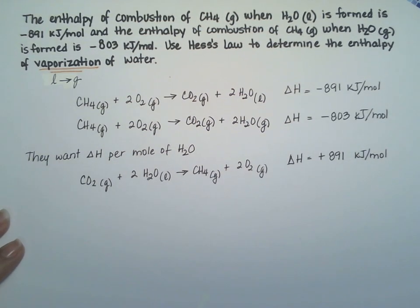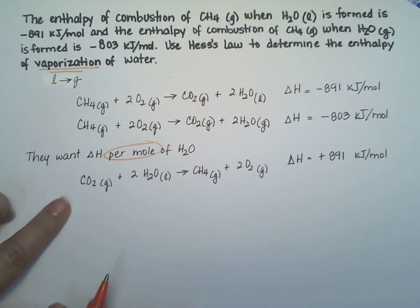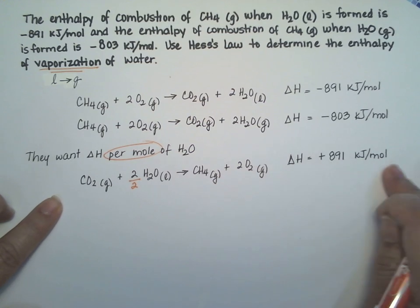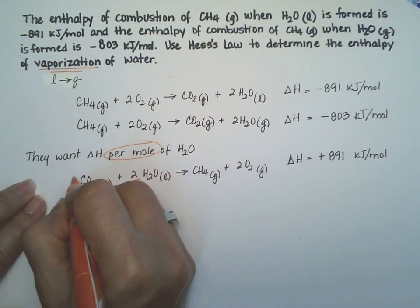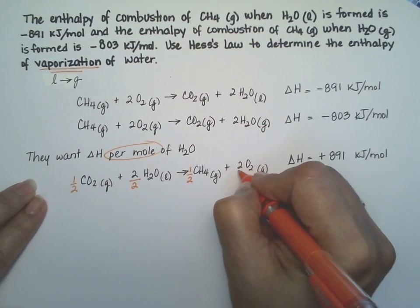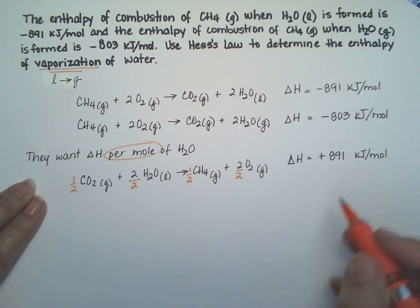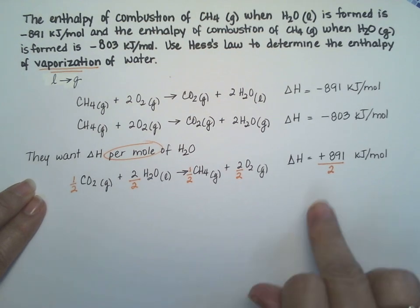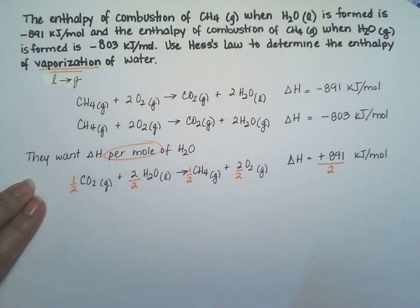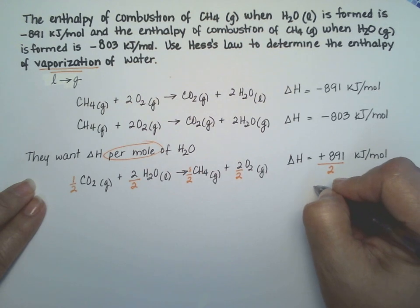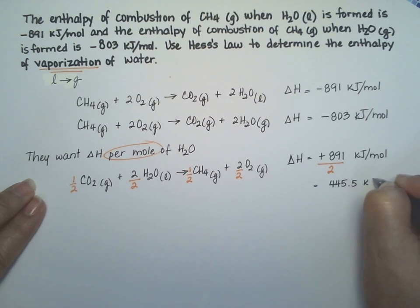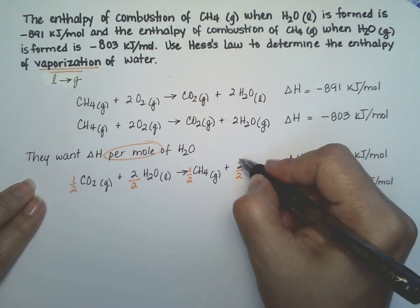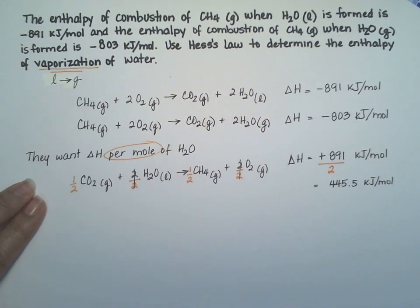We are not done because I want it per mole. And we need to actually divide the whole equation by two, because I only need one mole of water. I'm going to divide by two here, I'm going to divide by two here, and I'm going to keep dividing. This you will have to divide as well because this number was for two moles of water and you only want it for one mole of water. So this number right here is now 445.5 kilojoules per mole.